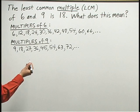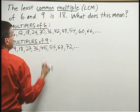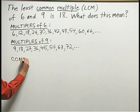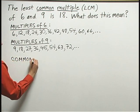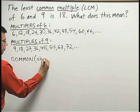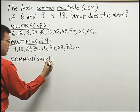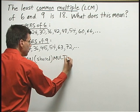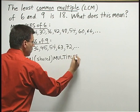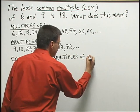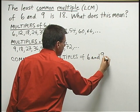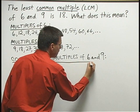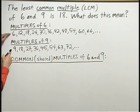Now, let's think about the meaning of the word common in the phrase least common multiple. When we talk about the common multiples of two numbers, we mean the shared multiples. The multiples those numbers have in common.